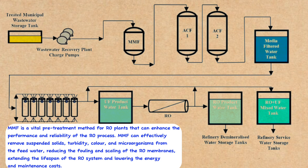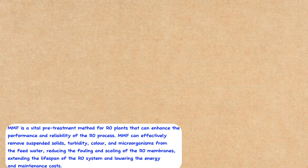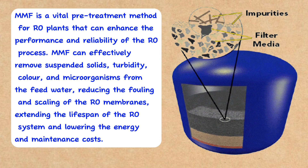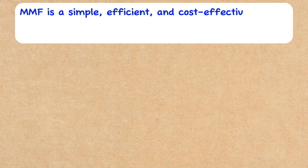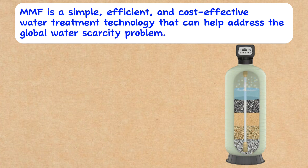In summary, MMF is a vital pre-treatment method for RO plants that can enhance the performance and reliability of the RO process. MMF can effectively remove suspended solids, turbidity, color, and microorganisms from the feedwater, reducing the fouling and scaling of the RO membranes, extending the lifespan of the RO system, and lowering the energy and maintenance costs. MMF is a simple, efficient, and cost-effective water treatment technology that can help address the global water scarcity problem.